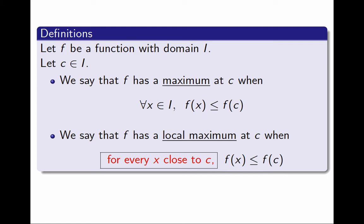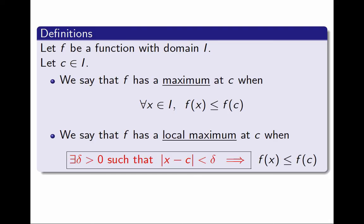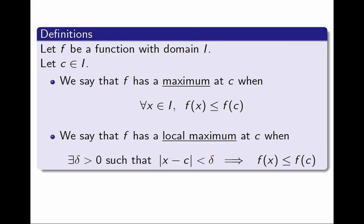For every x close to c means for every x on some interval centered at c. Or equivalently, it means that there exists some positive radius delta, such that if the distance between x and c is less than delta, then f(x) is less than or equal to f(c). And that is an entirely equivalent way of writing the definition.